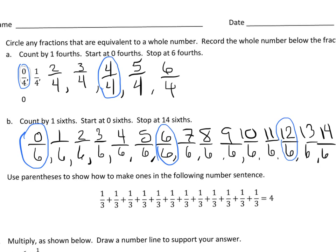Now it says use parentheses to show how to make 1s. I know 1/3 is a part of a fraction, but when I have 3 of them — 3/3 — I have a whole number. Look at all these grouped pieces. Each group is 3/3, 3/3, 3/3, or 1, 1, 1, and 1, which make 4.